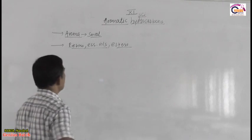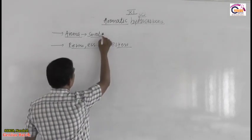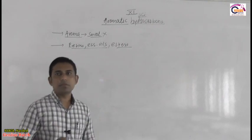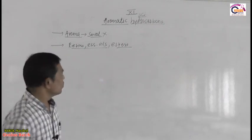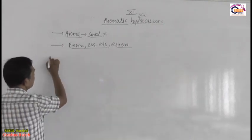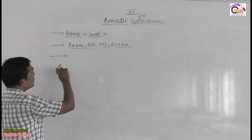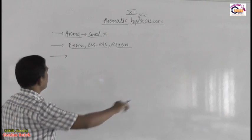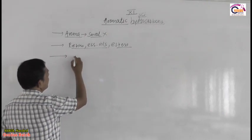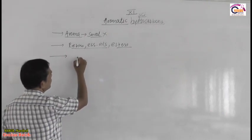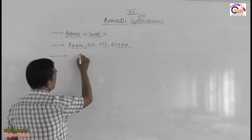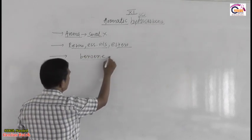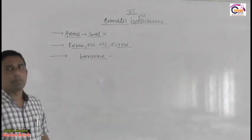Scientists later discarded the concept that substances which possess a smell are aromatic compounds. Presence of smell is not necessary for deciding whether a compound is aromatic. Today scientists define aromatic compounds as: organic compounds which possess properties like benzene are called aromatic compounds.